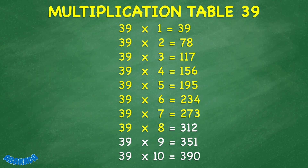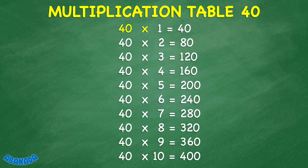39 times 8 equals 312. 39 times 9 equals 351. 39 times 10 equals 390. 40 times 1 equals 40. 40 times 2 equals 80. 40 times 3 equals 120. 40 times 4 equals 160. 40 times 5 equals 200.